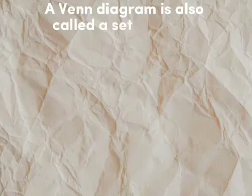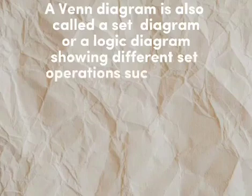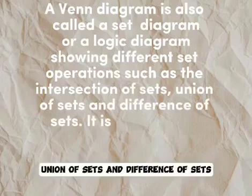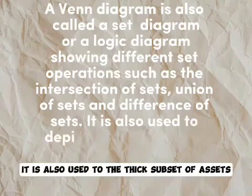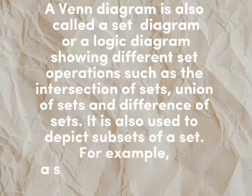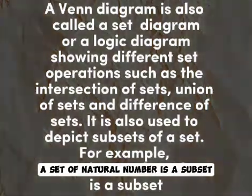A Venn diagram is also called a set diagram or a logic diagram, showing different set operations such as the intersection of sets, union of sets, and difference of sets. It is also used to define a subset of a set. For example, a set of natural numbers is a subset.